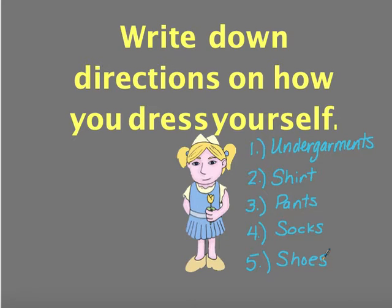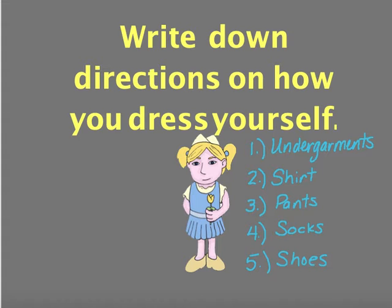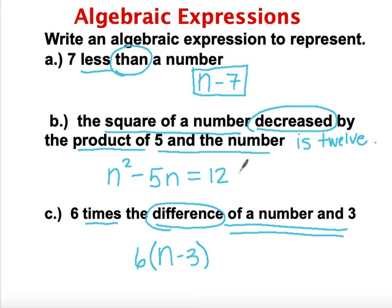Think of getting ourselves dressed as building that expression we did back here — building expressions with mathematical operations like 'less than,' 'times,' and 'squaring numbers.' Now when we have to go back and solve for these variables, what we have to do is peel off the layers, peel off the operations, but we have to do them backwards.